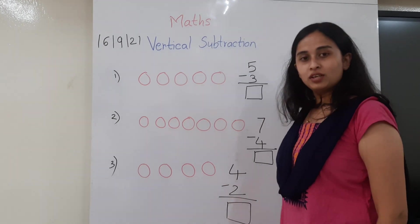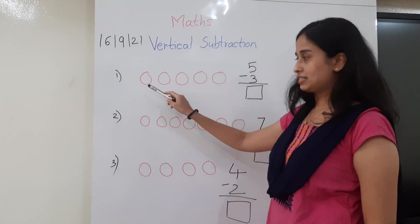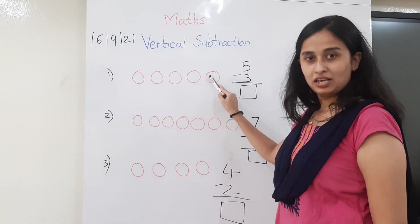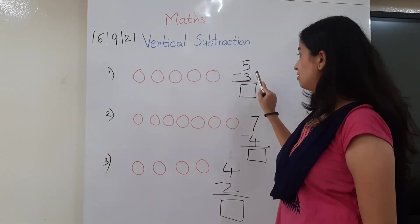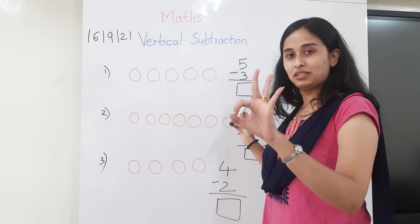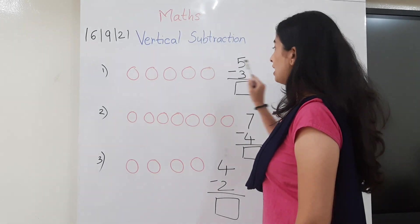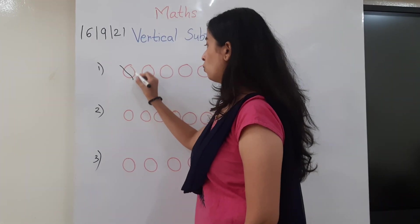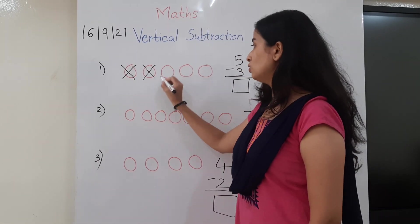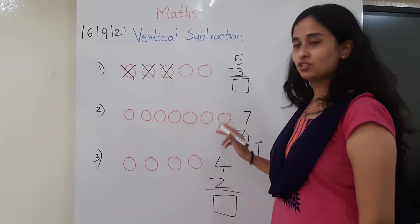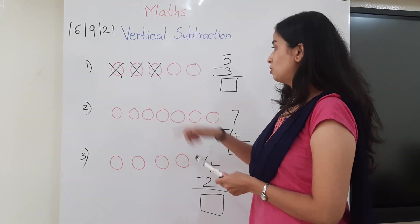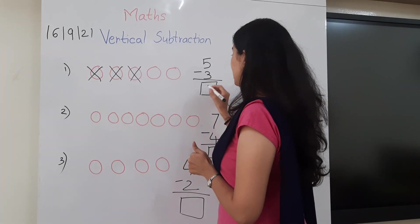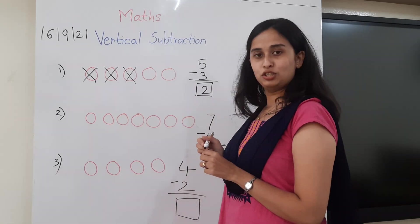Now what do you see here? You see there are 5 beads — 1, 2, 3, 4 and 5. Out of these 5 beads, you have to take away 3 beads. So I will just put a cross on that. We will take away 3 beads: 1, 2 and 3. So now how many beads are left? 1 and 2. So 5 minus 3 is 2.